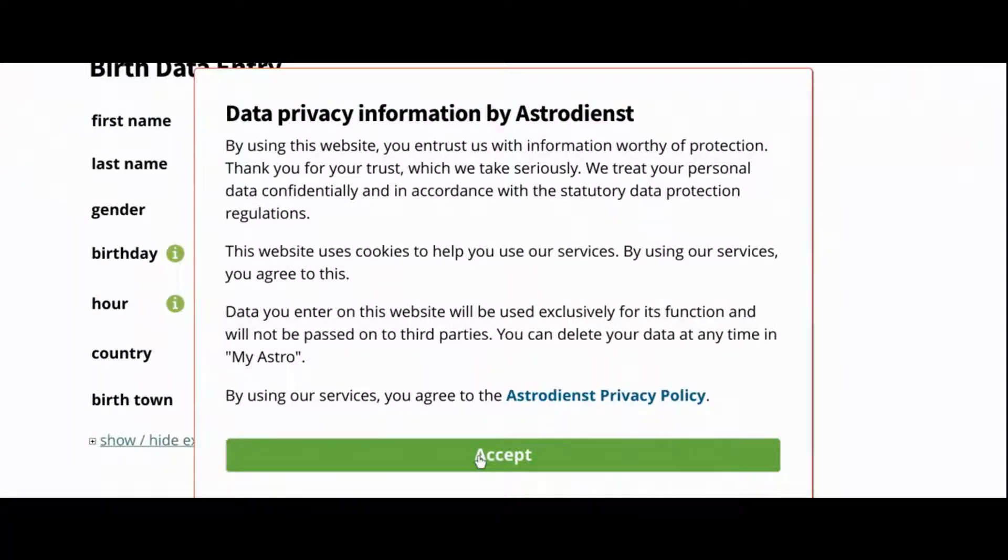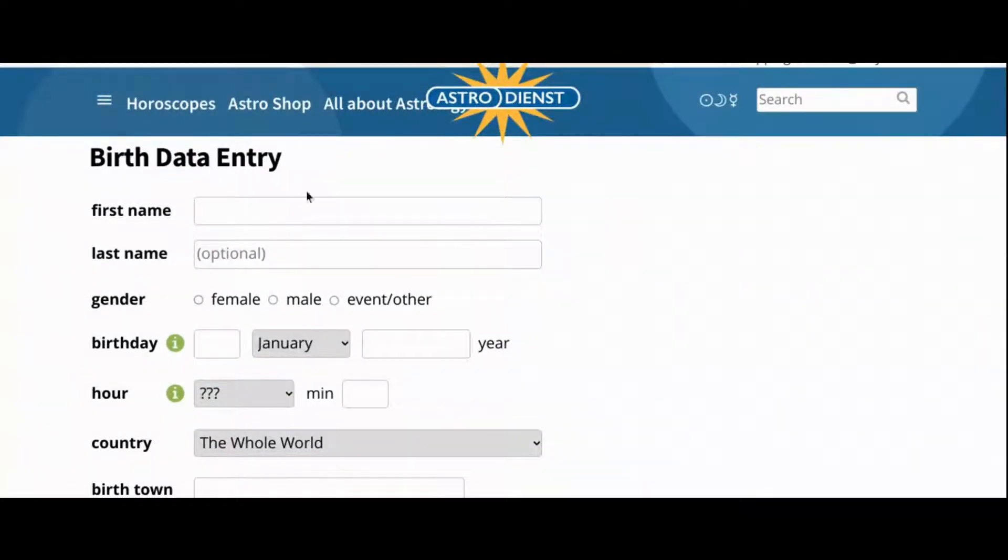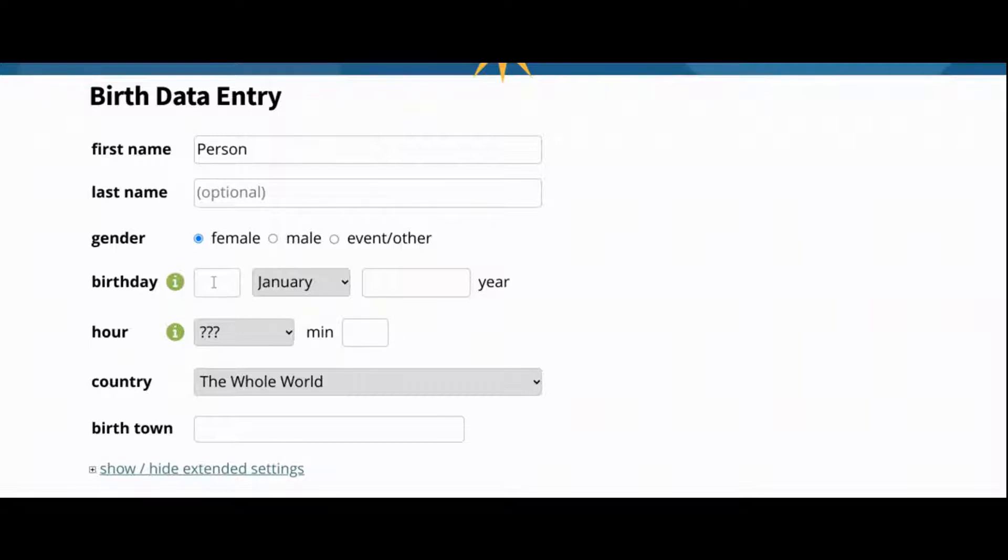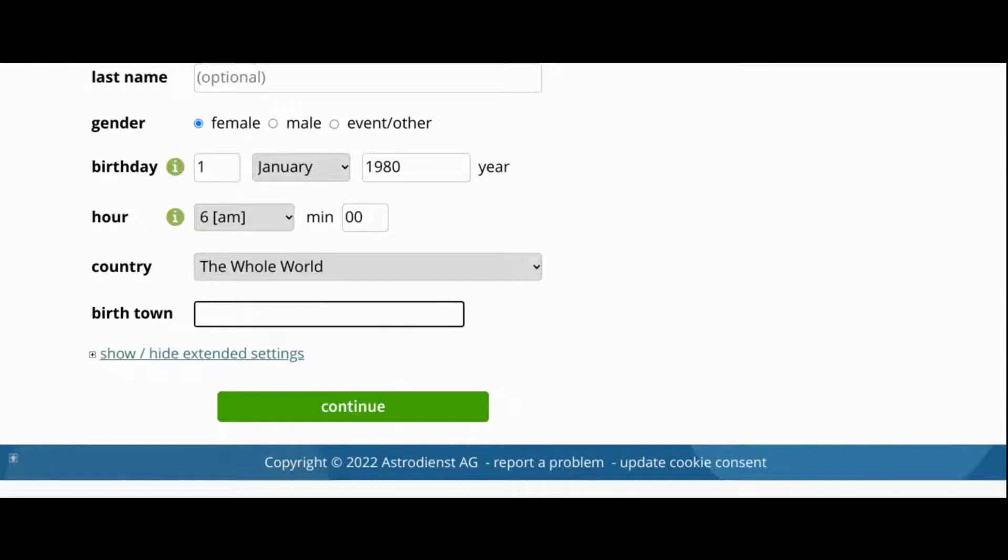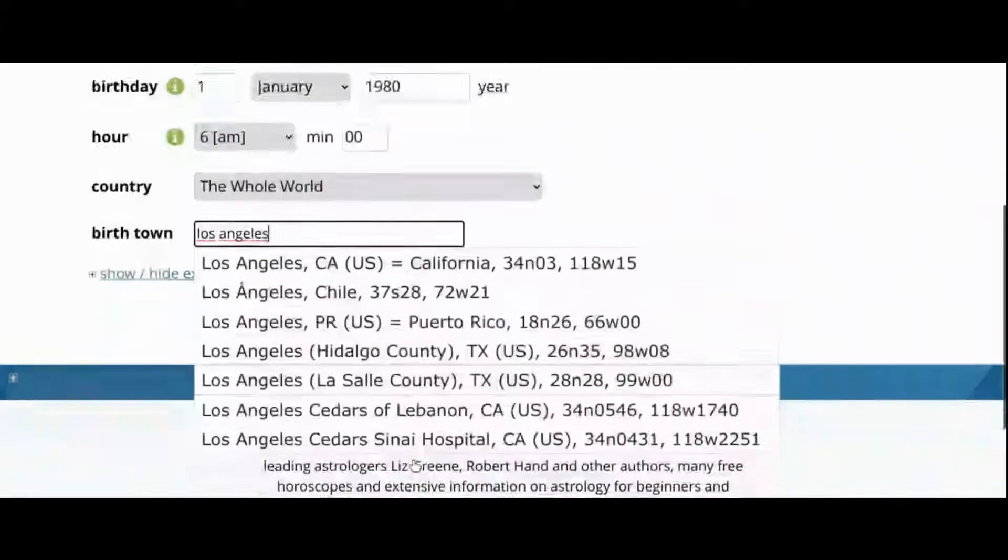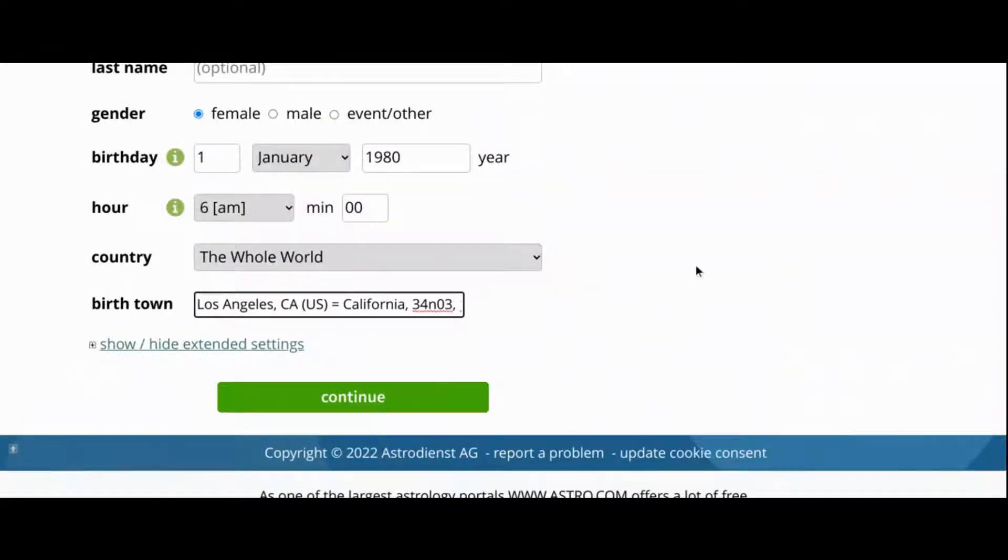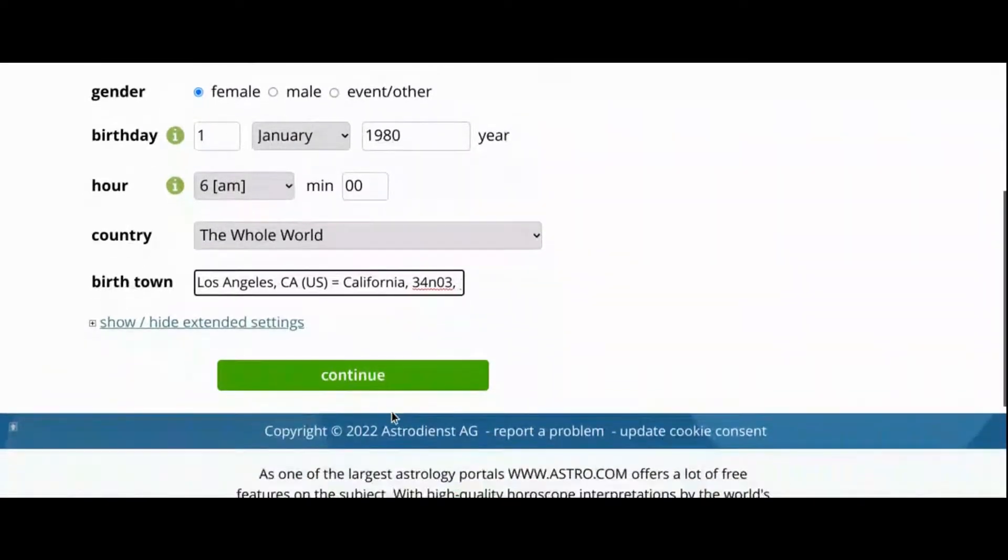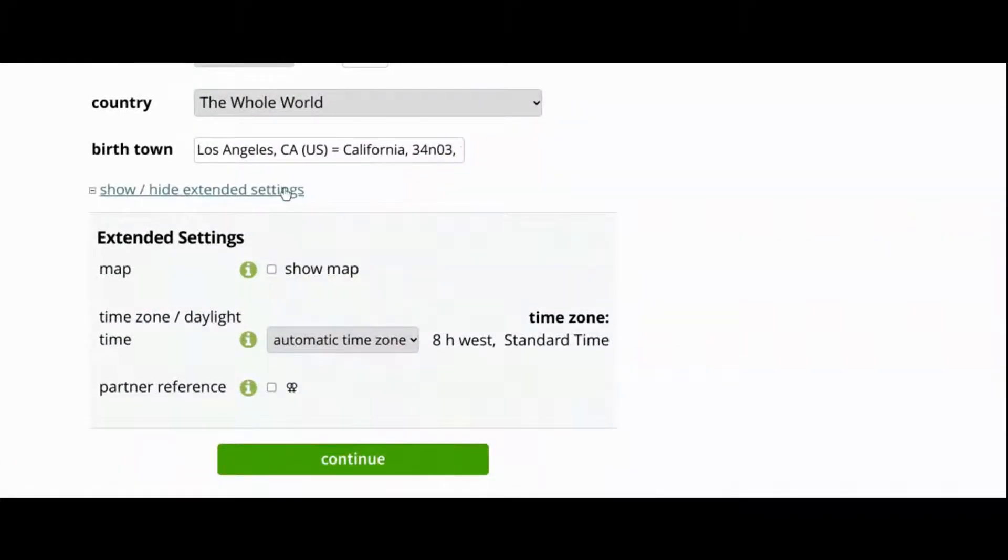You're now on the birth data entry page. Here you'll put in your name, date of birth, place of birth, and time of birth. Now I never use the last name field, so don't worry about that. And gender selection doesn't matter for creating charts, so don't worry about that either. I'm just using random info for this. When you type in the town, options will pop up as you can see for you to select. They have a good amount of locations available in the database, but if you were born somewhere super remote, you may need to choose an adjacent town that's a little bigger. I also don't bother with extended settings, so don't worry about that either. Just click Continue.